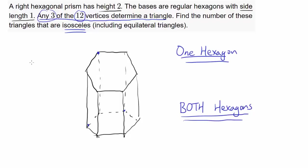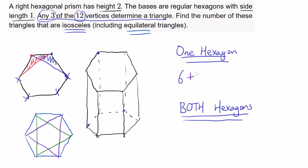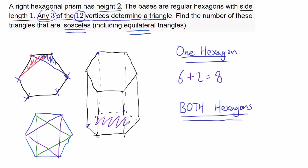For the first case, let's draw out a hexagon. How many isosceles triangles are there? We can pick each vertex to be the apex of our isosceles triangle — doing this for all 6 vertices gives us 6 such triangles. Are there any equilateral triangles? Yes — we can draw one equilateral triangle pointing one way and another pointing the other way, giving 2 more, for a total of 8. So we have 8 isosceles triangles on the top hexagon and 8 on the bottom, giving 8 times 2, or 16.